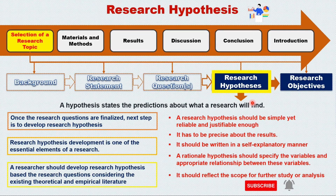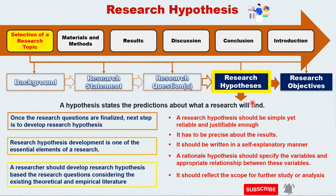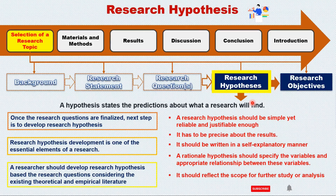It is very important for researchers to develop research hypotheses that are simple but reliable and justifiable. The research hypothesis should be precise about its results and written in a self-explanatory manner. If a researcher develops a rational hypothesis, they should specify the variables and the appropriate relationship between them. Moreover, the hypothesis should reflect the scope of further studies or analysis.